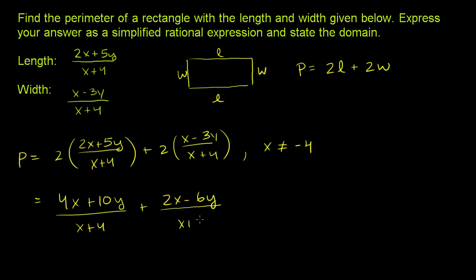Not x plus y. x plus 4 over x plus 4. And we have to remember, x cannot be equal to negative 4. Now we want to add these two rational expressions. And lucky for us, we already have a common denominator, so we don't have to find a common denominator.